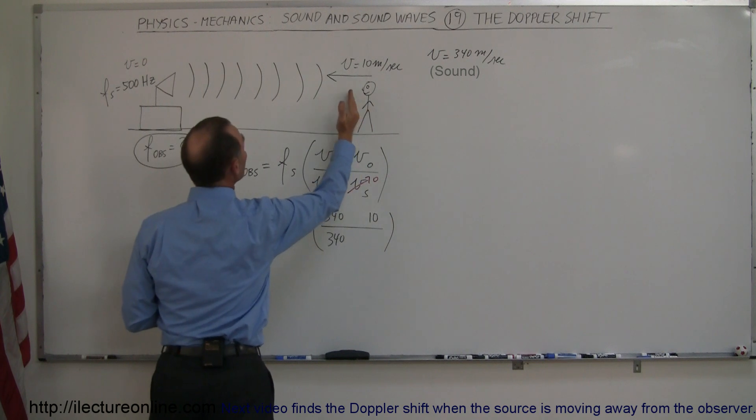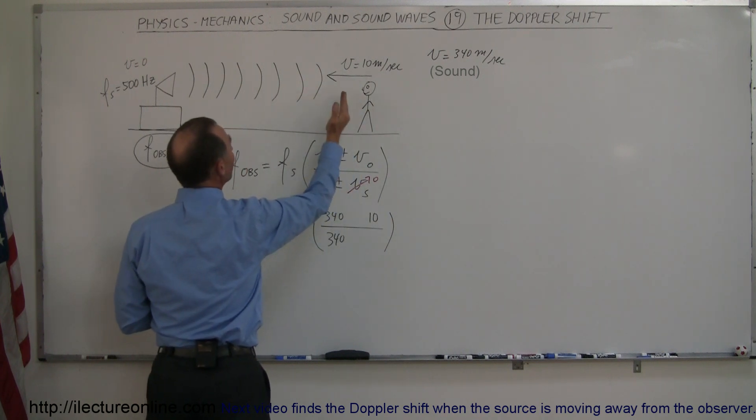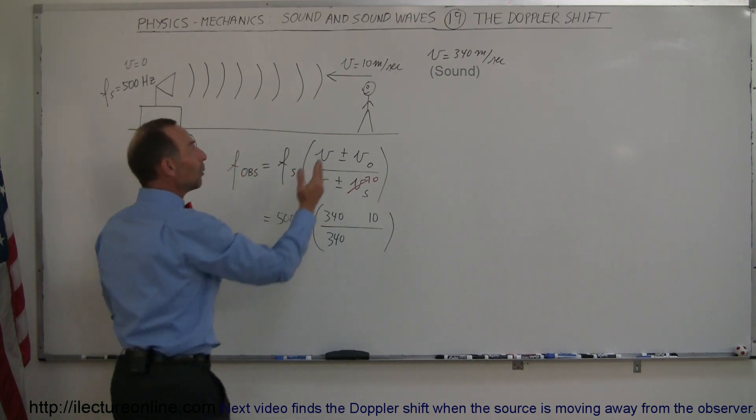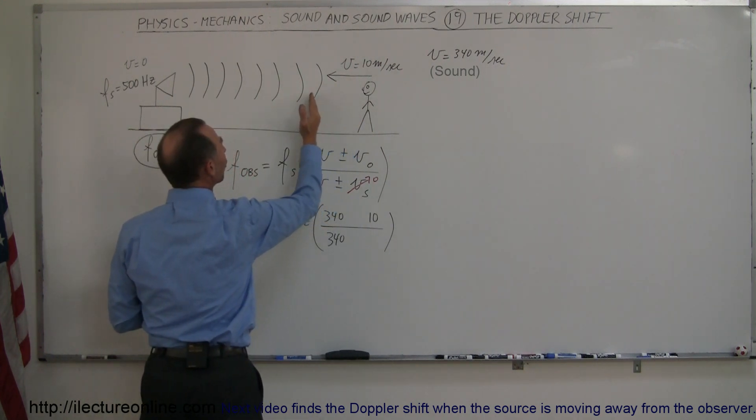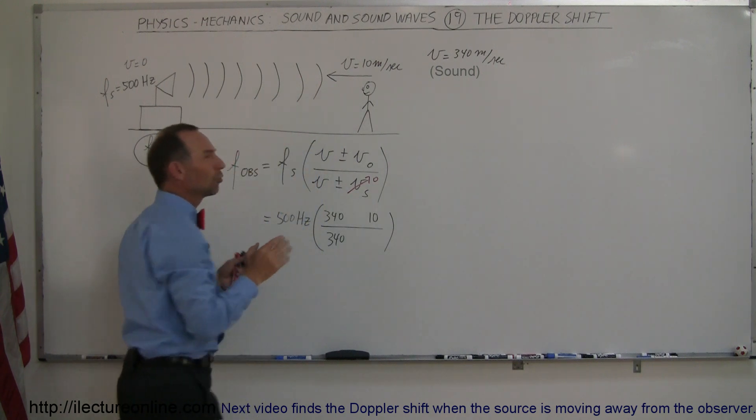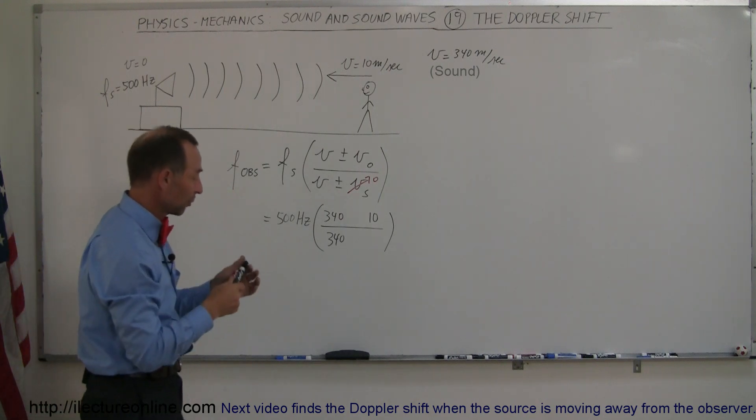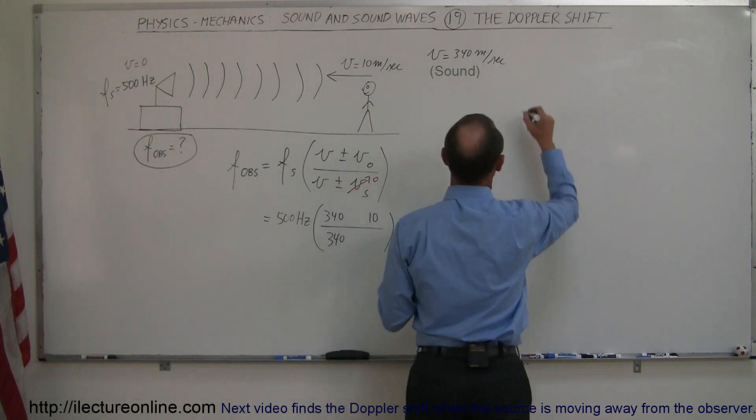If the observer is moving towards the source, that means that the waves will get to him faster than they would if he was standing there. So it will have the effect as if the waves are closer together. Closer together means higher frequencies, right? They'll come to him quicker. Let's figure this out here.